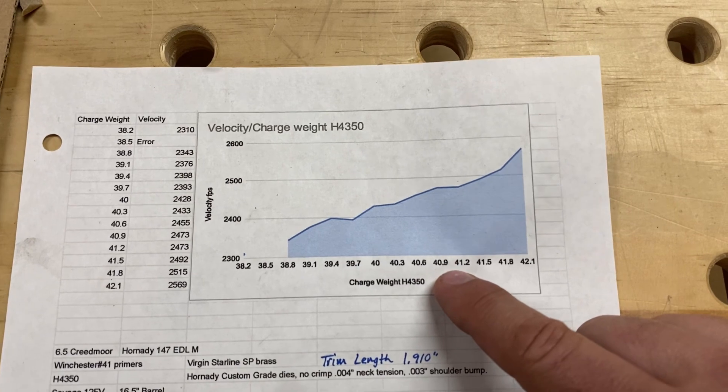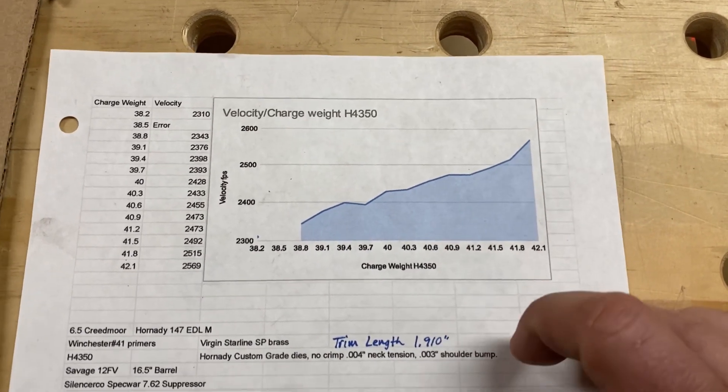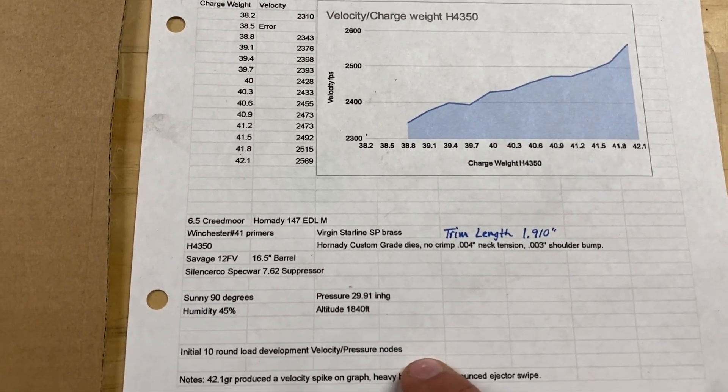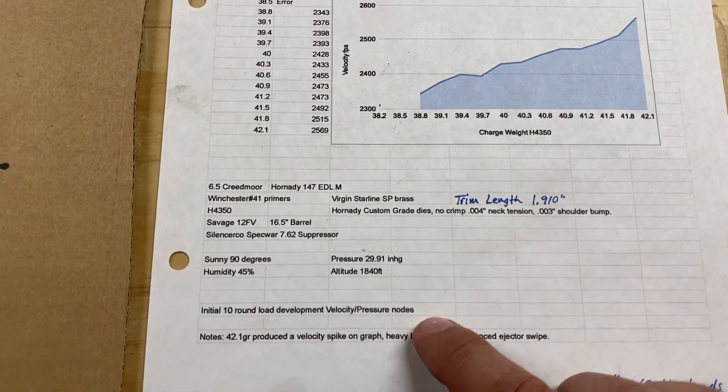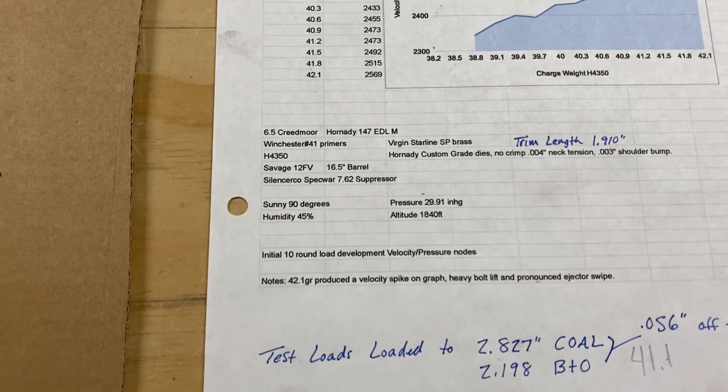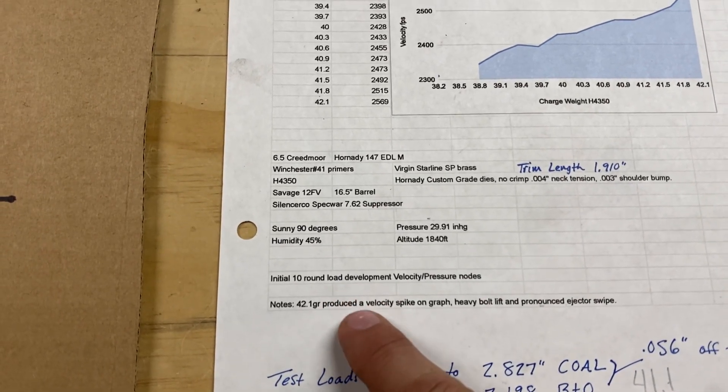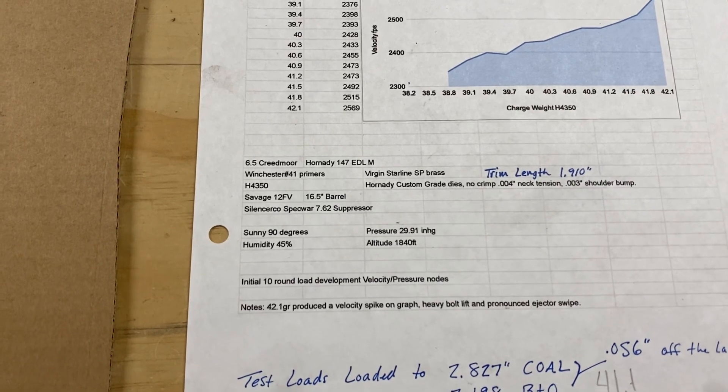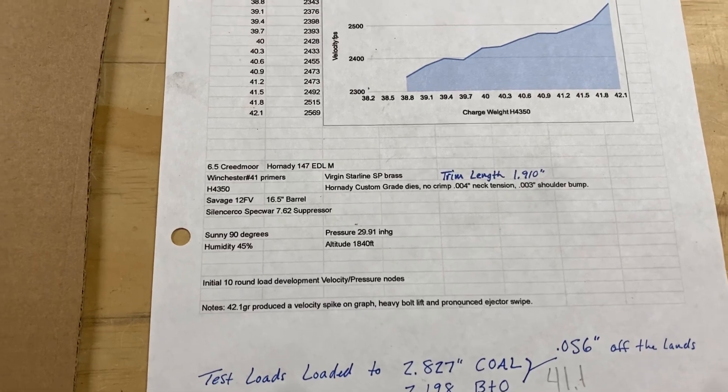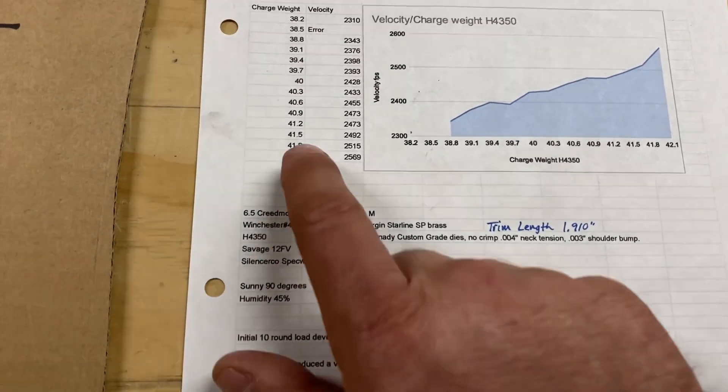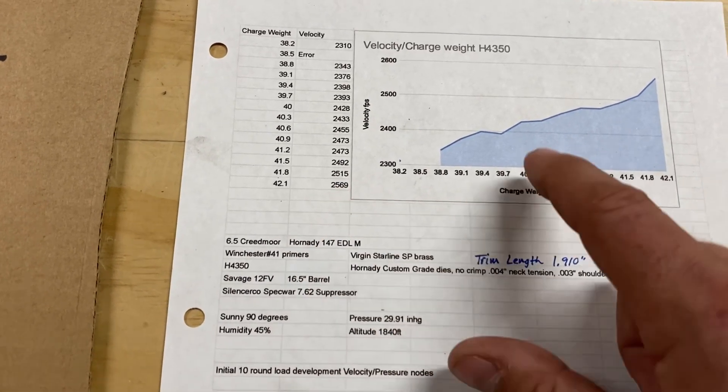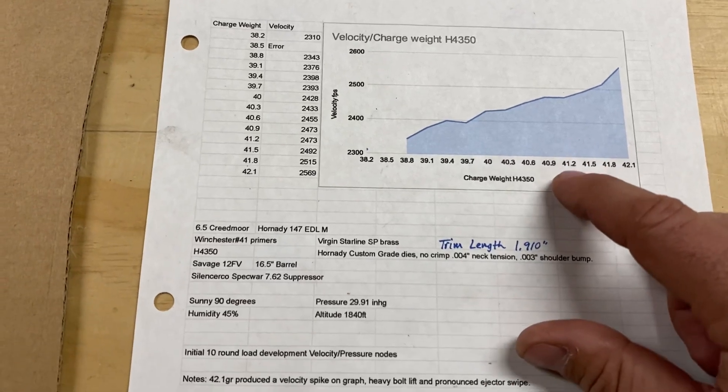So I decided on about 41.1 grains of H4350 with 147 ELDMs. And this is Starline virgin small primer brass. And it was, you can see temperature, humidity, all that good stuff, altitude. So when I shot them over the chronograph, I basically just recorded the feet per second. And what we were looking for is these flat spots. And so I picked 41.1 grains.